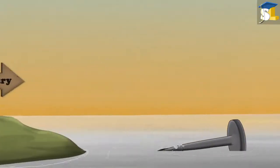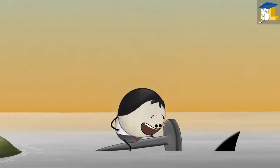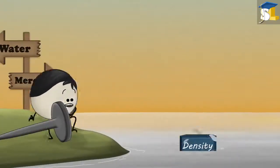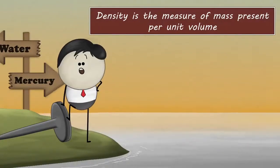Do you know why the iron nail sank in water and floated on mercury? It is because of density. Density is the measure of mass present per unit volume.